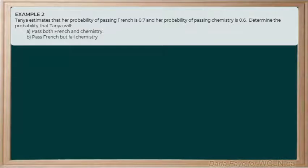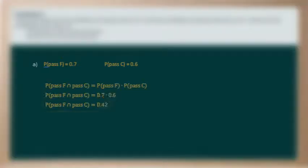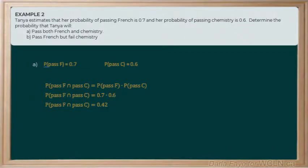Let's look at another example. Tanya estimates that her probability of passing French is 0.7, and that the probability of passing chemistry is 0.6. We've got two parts to this question. The first asks us to calculate the probability that she will pass both French and chemistry. If she passes both, we're looking to calculate the probability of passing French and passing chemistry. The probability of passing French is 0.7 and the probability of passing chemistry is 0.6, so we multiply those two values together to get a probability of 0.42 — a 42% chance of passing both.